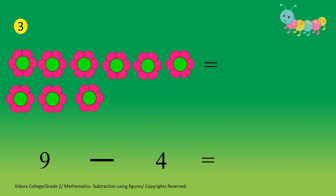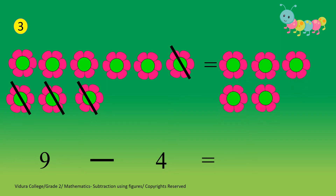Question number 3. There are 9 flowers and out of 9 flowers we have to take away 4 flowers. Let's strike out and find how many flowers will remain once we strike out 4 flowers out of 9. 1, 2, 3, 4. So how many flowers are remaining? Yes, 5 flowers. 9 minus 4 equals 5.